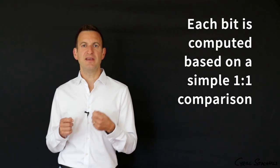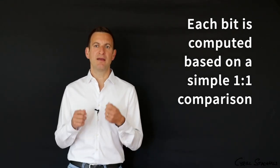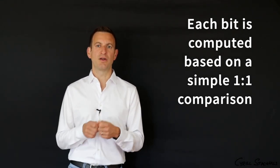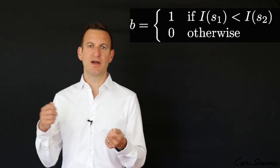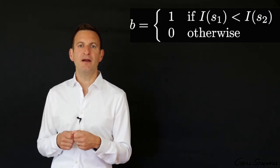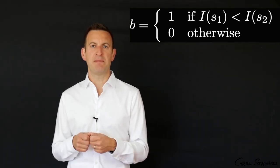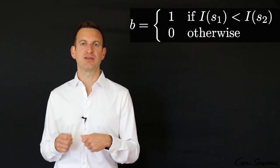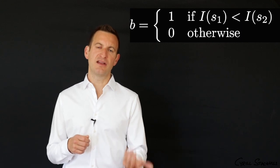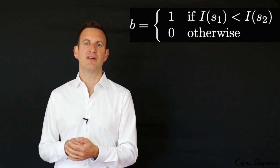And those binary strings, those 0 and 1 strings, are computed in a very simple fashion for the BRIEF descriptor. They are basically worked by comparing pixel intensities 1 to 1. So let's sample two pixel locations s1 and s2, and then we compare the intensity values of these sampled pixel locations in my local patch.